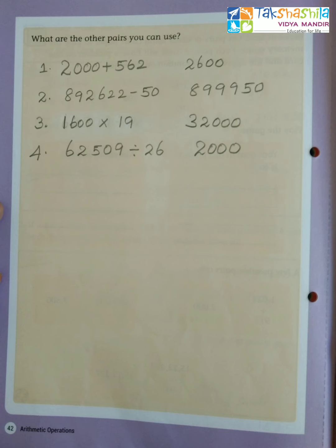Moving on to the third pair: 1600 into 19. If I round off 1600, I'll be getting 1600, or if you want to round off to 2000 you can. If I round off 19, I'll be getting 20. So 1600 into 20, which gives 32,000. Sixteen twos are 32, so after that we have to add three zeros.